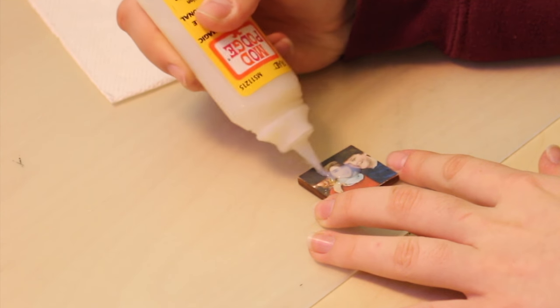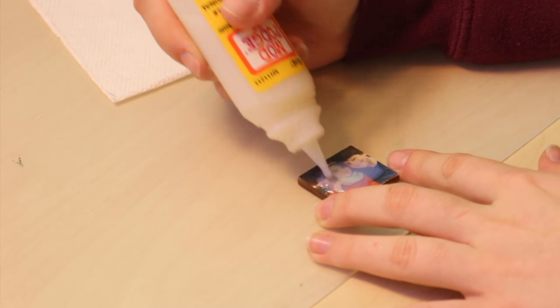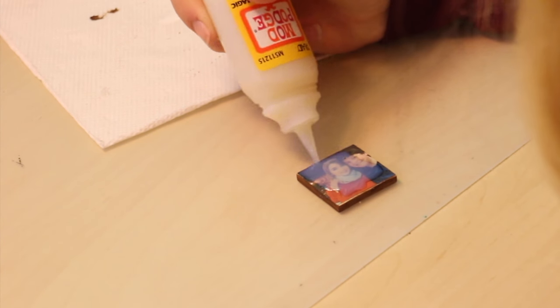And I would actually recommend using plain paper rather than photo paper because the photo paper, the ink on top of that starts dissolving into the glue. Which leads me to my next step, and that's to put the three-dimensional glue over the picture.